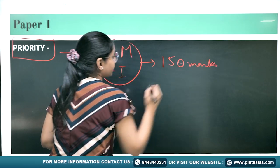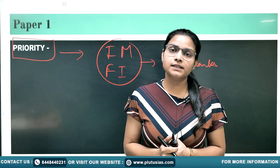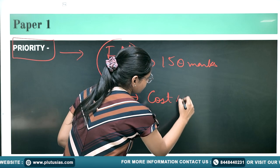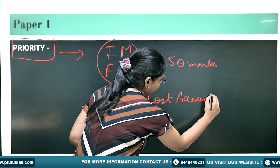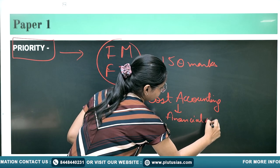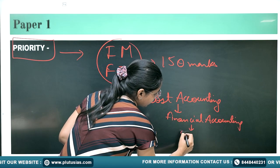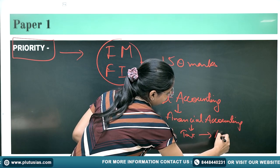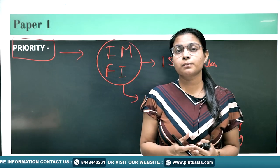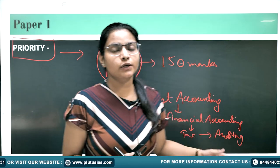After seeing the marks distribution and trends across various years, I would suggest you focus on Cost Accounting first, then Financial Accounting, then Taxation, and then Auditing. You have to decide your priority while preparing, because if you just go and start reading you will end up wasting your time.